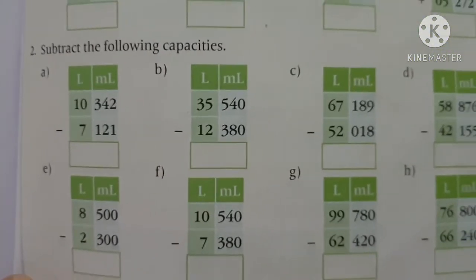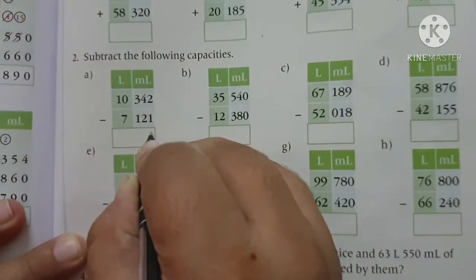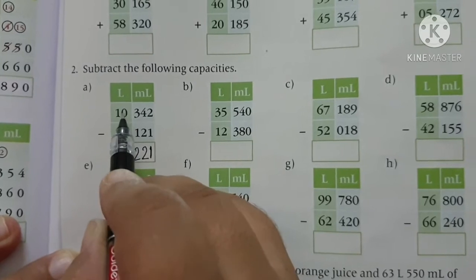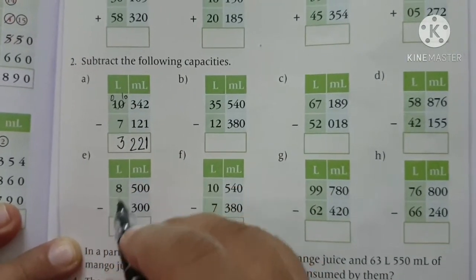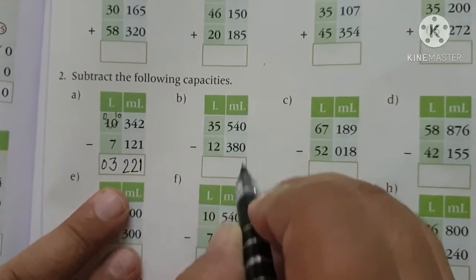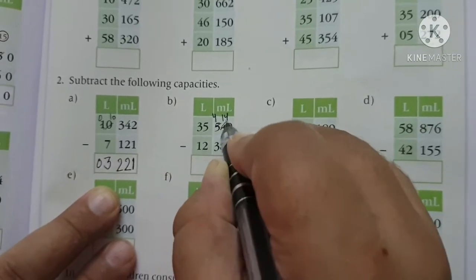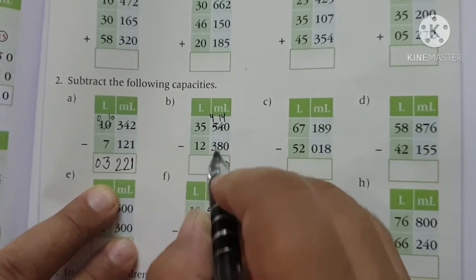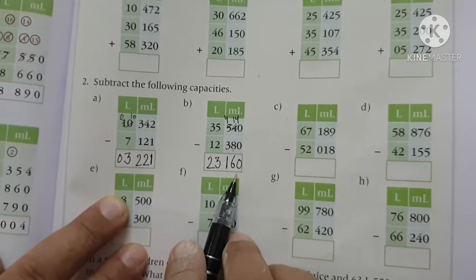Next question is: subtract the following capacities. Now we will subtract this. 2 minus 1 is 1. 4 minus 2 is 2. 3 minus 1 is 2. 10 minus - now here is 0 and here is 1. So we have 10 here and 0 here. So, 10 minus 7 is 3. So, our answer is 3 litre, 221 milliliter. Clear? Next is: 0 minus 0 is 0. Now we have 4 here and 8 here. So, we borrow 1 from here. And here is 4 and here is 14. 14 minus 8 is 6. And 4 minus 3 is 1. 5 minus 2 is 3. And 3 minus 1 is 2. So, here we get 23 litre, 160 milliliter.